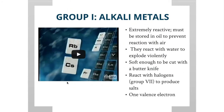Group 1 are the alkali metals. Alkali metals are extremely reactive and they must be stored in oil to prevent their reaction with air. They react with water to explode violently. However, they are soft enough to be cut with a butter knife, and they react with the halogens, which are group 7, to produce salts.